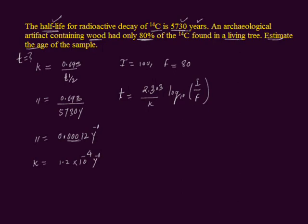If values are known, we can plug in and find out the age of the sample. 2.303 divided by K value is 1.2 multiplied by 10 to the power minus 4 and unit is per year, log brackets i is 100 and f, that is final amount, 80.